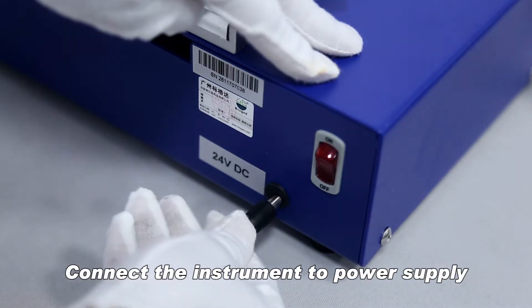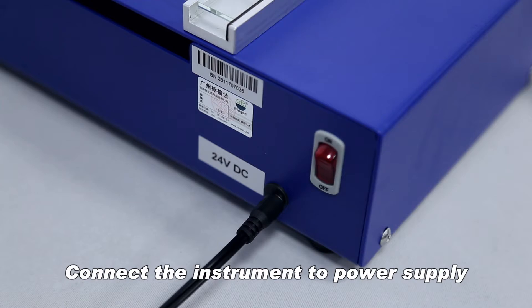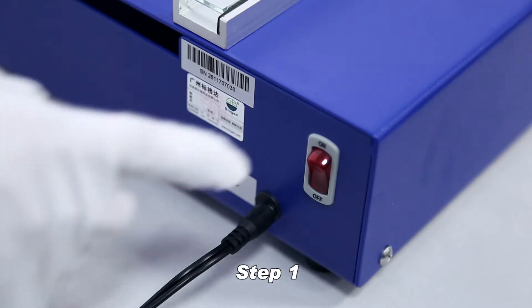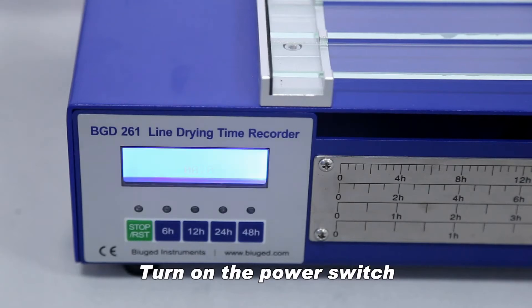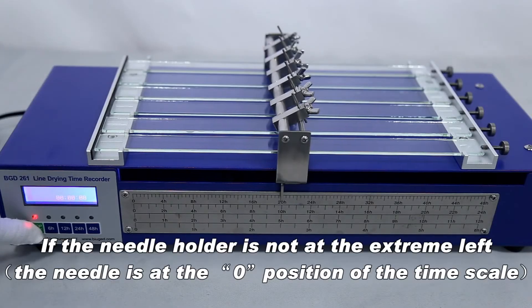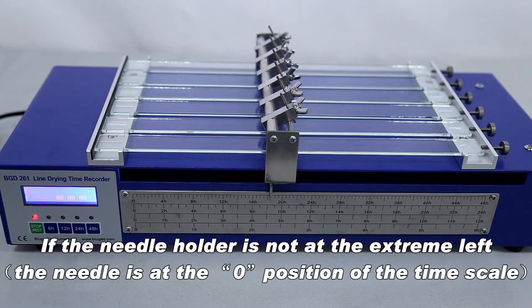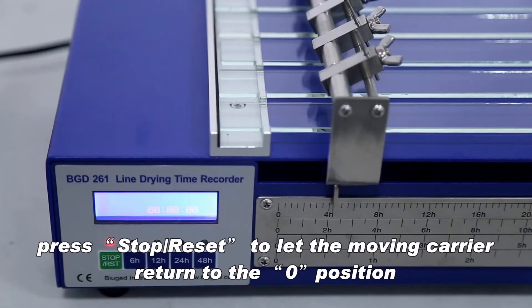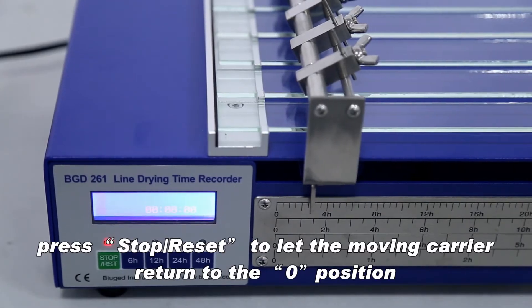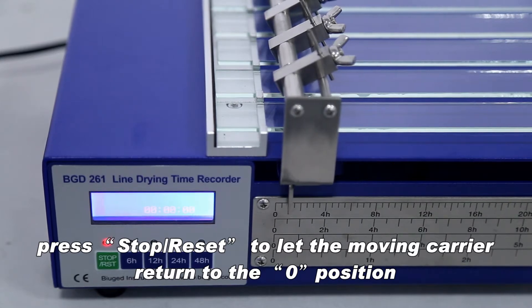Connect the instrument to power supply. Turn on the power switch. If the needle holder is not at the extreme left, the needle is at the zero position of the time scale. Press stop reset to let the moving carrier return to the zero position.